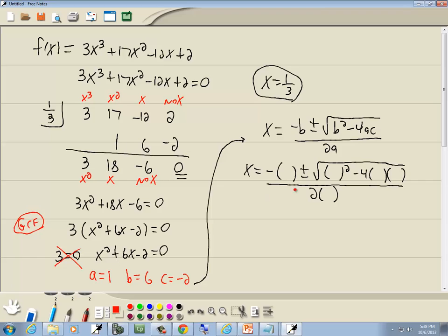Now we said a was 1, so wherever we had an a, we'll put in 1. We said b is 6, so wherever we had a b, we'll put in 6. And we said c was negative 2, so wherever we had a c, we'll put in negative 2. So that gives us negative 6 plus or minus square root 6 squared is 36, negative 4 times 1 times negative 2 is positive 8, all over 2.